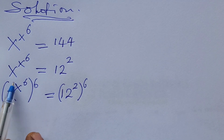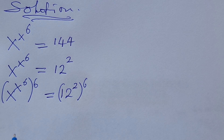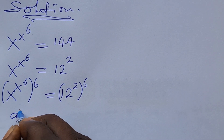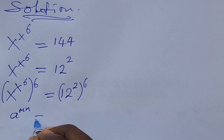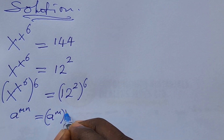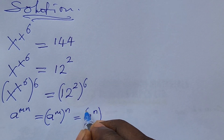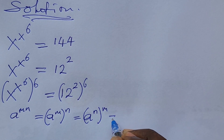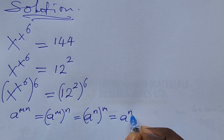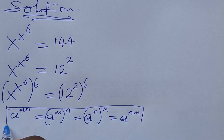Now if you recall the law of indices, which says that if you have a to the power of m times n, this is the same as a to the power of m, in bracket, raised to n — which is also the same as a to the power of n, in bracket, raised to m, or simply a to the power of n times m.